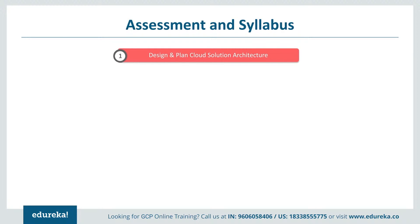Moving on to the syllabus — Section 1 is designing and planning a cloud solution architecture. Here, one should be good at designing a solution infrastructure that meets both business and technical requirements. Topics include business use cases, product strategies, cost optimization, supporting the application design, integrations, and trade-offs. Designing network, storage, and computing resources is also part of this section.